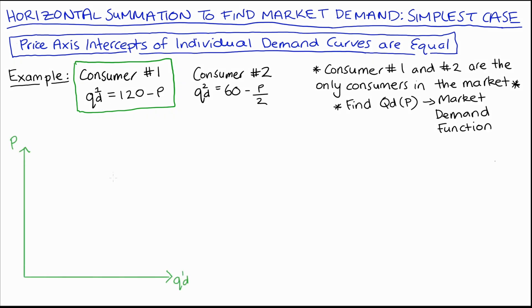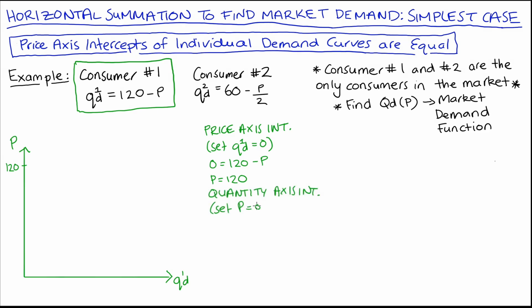Let's draw out some axes for consumer number one, and I'll find the price axis intercept by setting QD1 equal to zero. So I get zero is equal to 120 minus P. Adding P to both sides, this solves for P is equal to 120 when Q is equal to zero. I'll mark that in as our price axis intercept. I'll solve for the quantity axis intercept — that's when price is equal to zero. Substituting in P equal to zero, I find that QD1 is equal to 120. I'll put that point in, join those two points up, and that's consumer number one's demand curve.